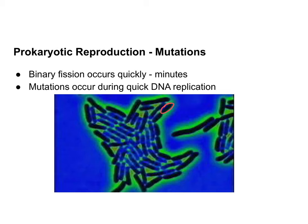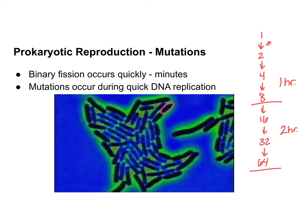One bacterium can reproduce potentially within a matter of minutes — about 20 minutes is a common time frame for binary fission. So one bacterium creates two in 20 minutes, four in 40 minutes, then eight, 16, 32, 64. This is exponential growth, and after about two hours we've already gone from one bacterium to 64 — a lot of reproduction in a very short time.